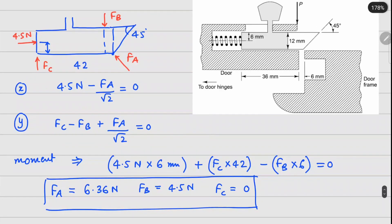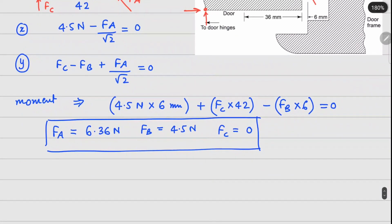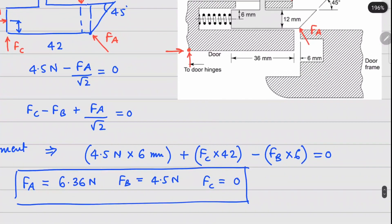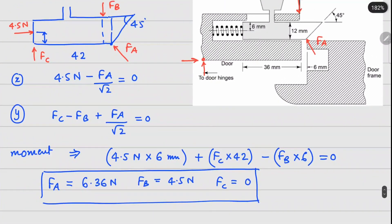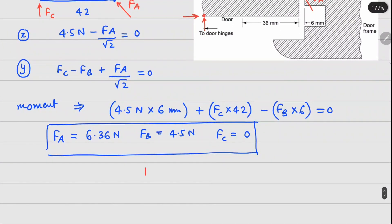For the door-and-latch assembly with no friction, the only contact force is FA, and taking moments about the hinge gives P·HX = FA·HX/√2, so P = FA/√2. This gives P = 4.5 N.